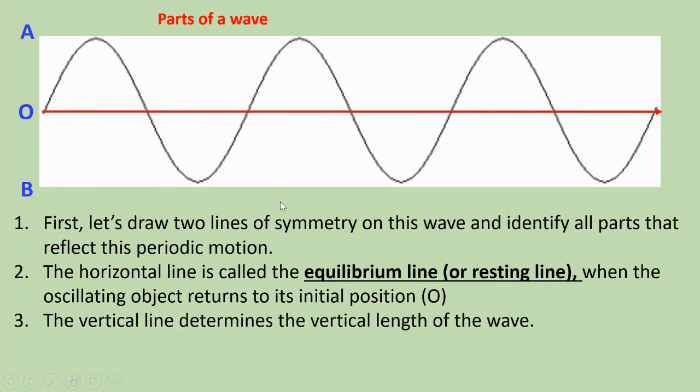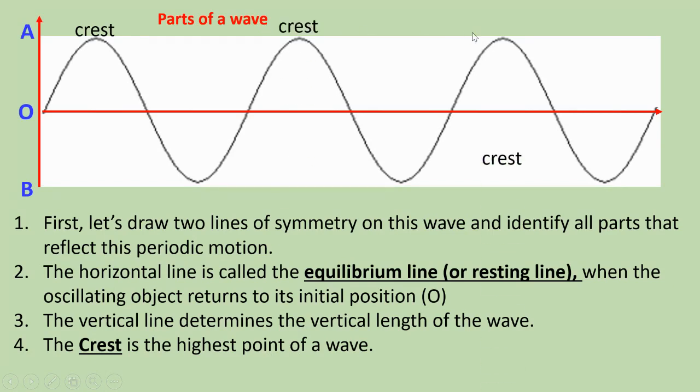The vertical line determines the vertical length of the wave. The crest is the highest point of a wave, and the trough is the lowest point of a wave.